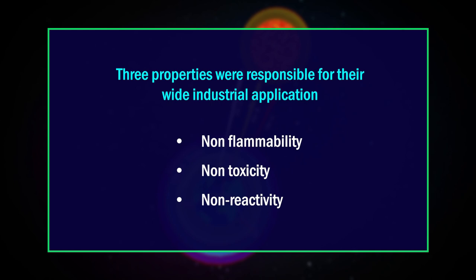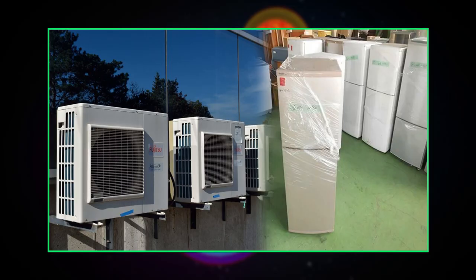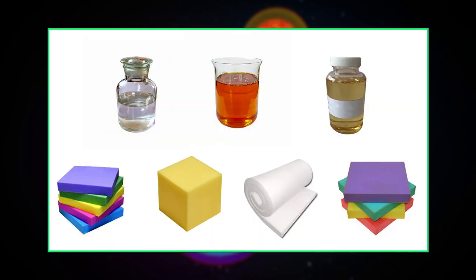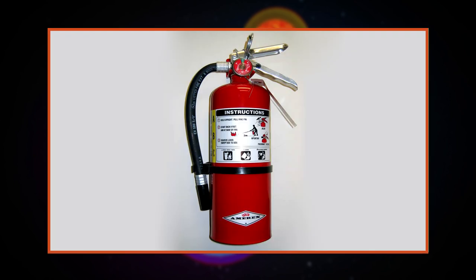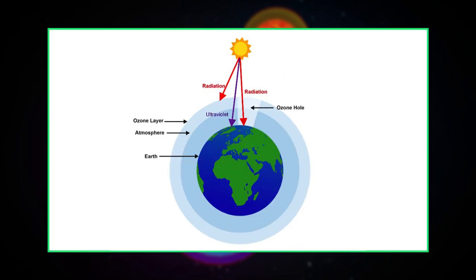Now let's look at the causes of ozone depletion. CFCs are major culprits, and we must identify their sources. Three properties were responsible for their wide industrial applications: non-flammability, non-toxicity, and non-reactivity. Since CFCs are non-flammable and non-toxic, they are used as coolants in refrigerators and air conditioners, for making polystyrene containers in food packing, as blowing agents for foam plastics, as solvents for removing grease from electronic equipment and cleaning computer chips, and for firefighting as halons in fire extinguishers.